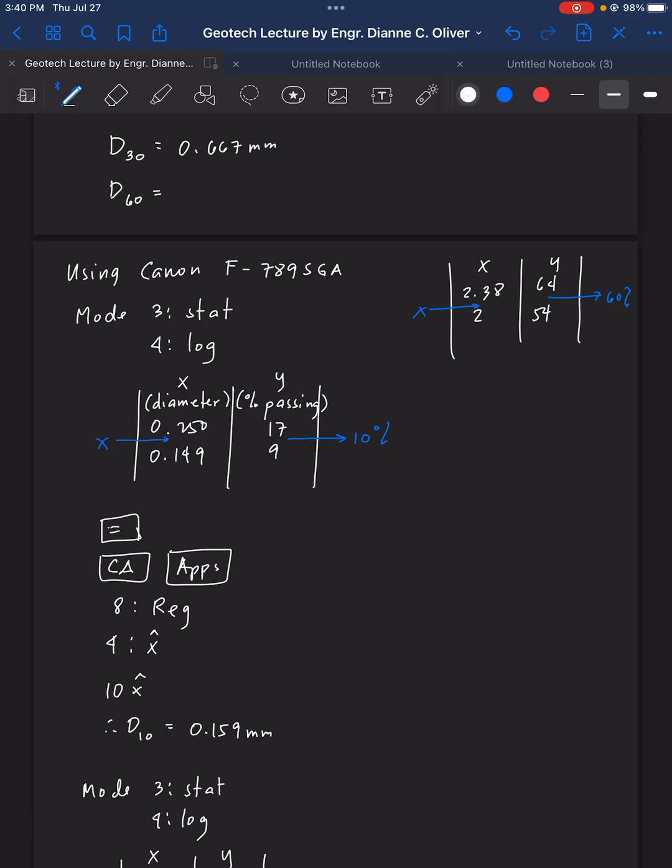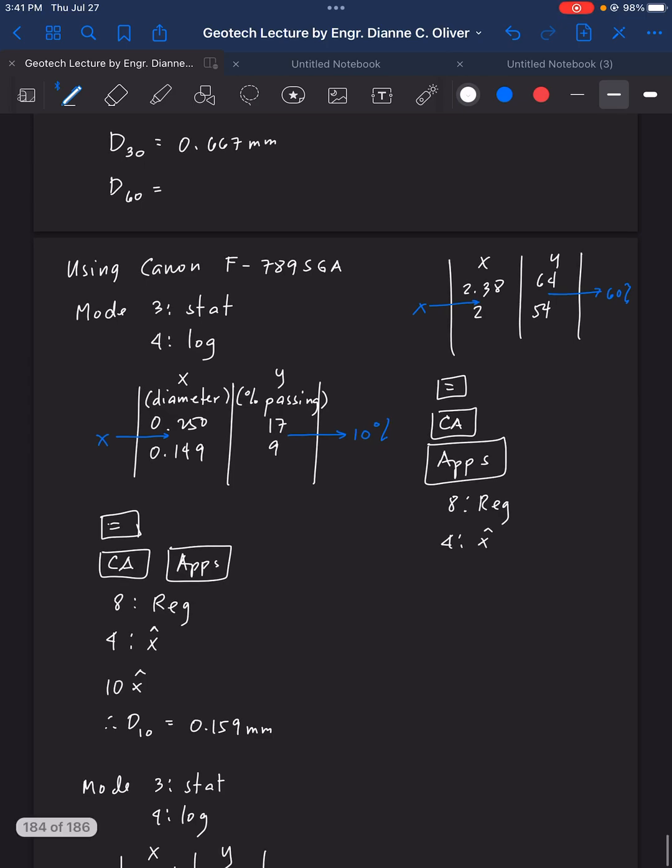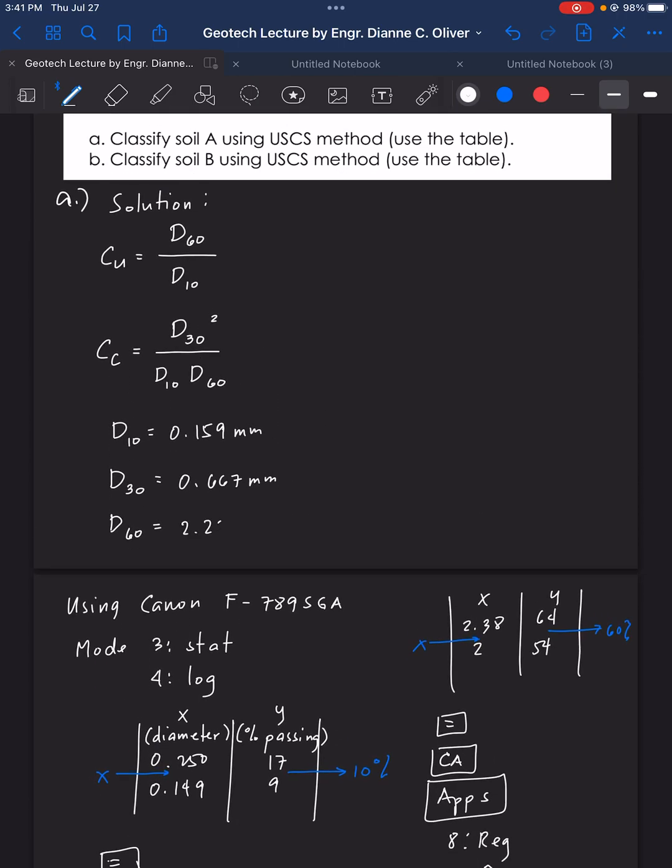This is your 60% passing. Then, we're looking for the X value here. It should be 64. So, again, you click the equal sign, CA, then go to apps, click the button, apps, then go to 8, reg, 4, X bar, and then type there 60. Then, X, therefore, we have now here, D60 as 2.22 mm. D60 is 2.22 mm.